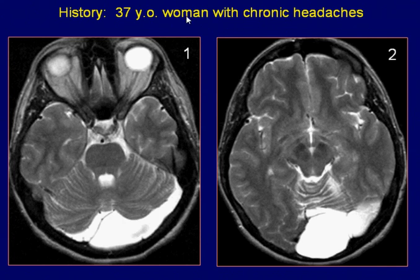A 37-year-old woman with chronic headaches. Axial T2-weighted images of the brain demonstrate a well-defined hyperintense area behind the cerebellum. The lesion is of similar signal intensity to CSF.